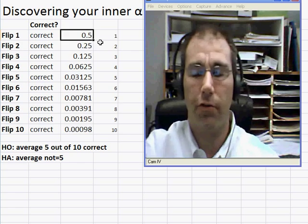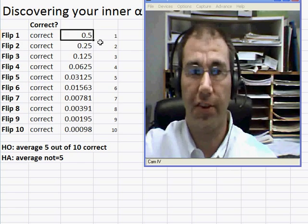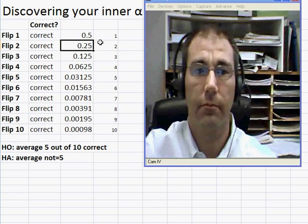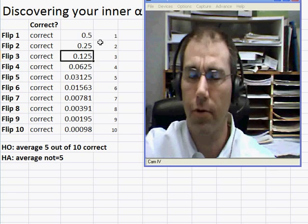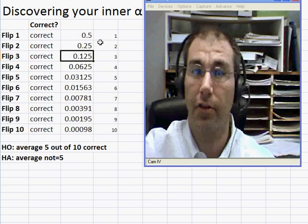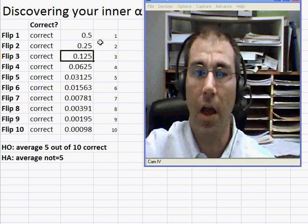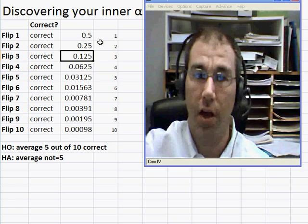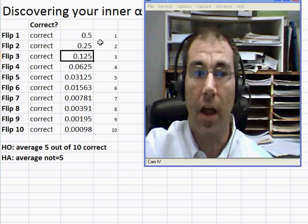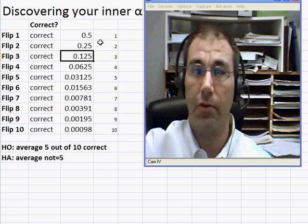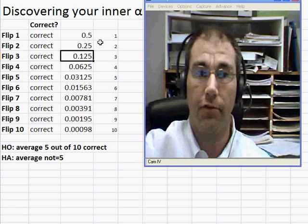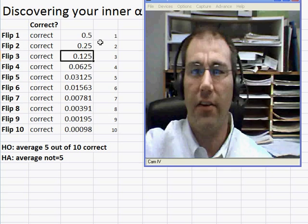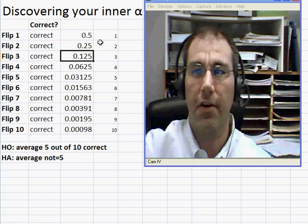Nobody would reject the null hypothesis after seeing the evidence of the first flip or the second flip, and I hope no one would reject the null hypothesis after the third flip because the probability that what we're seeing is random and the null hypothesis is still true is 12.5%. Your p-value would be 0.125, and you don't reject null hypotheses with a p-value of 0.125.